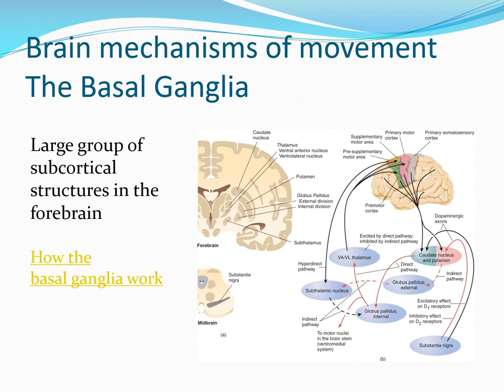The striatum is inhibiting an inhibitor in the direct pathway. The thalamus does a lot of communication with the motor cortex, so if we weren't inhibiting this we would be moving all the time. The globus pallidus internal has a lot of spontaneous activity and inhibits all of this possible motor movement. The motor cortex communicates to motor neurons in the spinal cord.